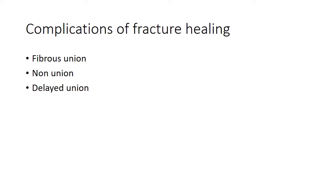Coming to complications of fracture healing: one complication is fibrous union, which occurs when immobilization is not done properly. When immobilization is not proper, instead of osseous or bony union, fibrous union takes place. Non-union results when there is soft tissue interposed between fracture ends, and delayed union can occur from any usual cause of delayed wound healing.